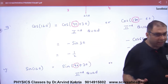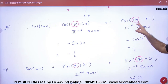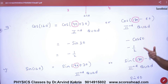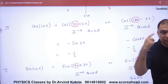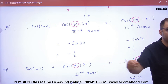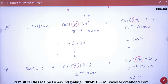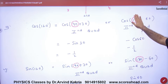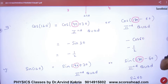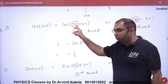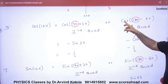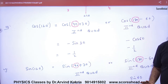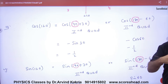Now the second method: if I write cos(120) as cos(180 − 60), and the first standard angle is 180 or 360, there is no conversion — cos remains cos. So it becomes cos(60), which is one half. With the negative sign from the second quadrant, the answer is still minus half.